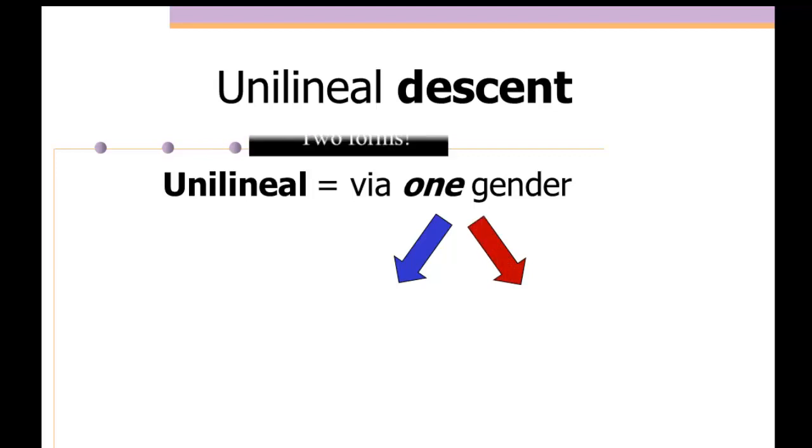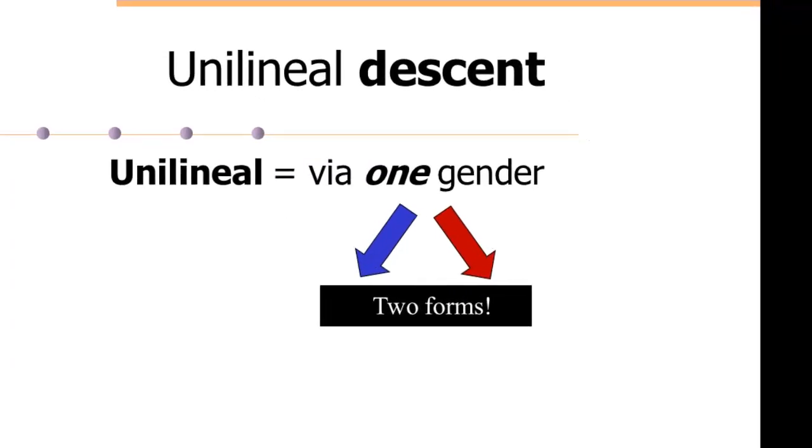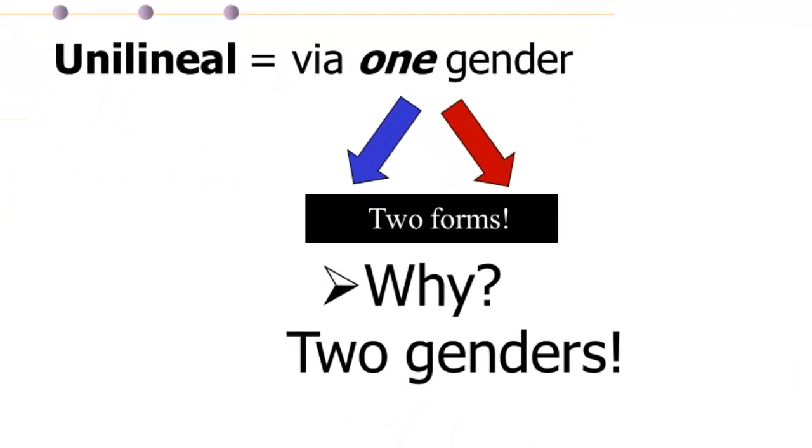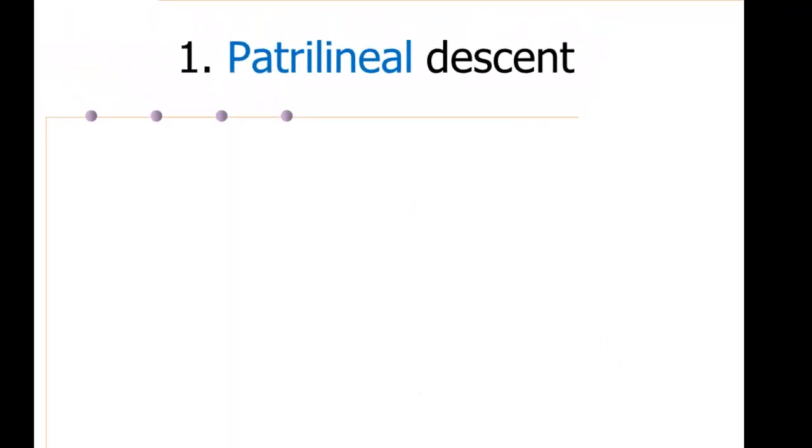And when we ask, well, why would that be? Why would there be two forms of unilineal descent? The answer, of course, is two genders. One form of unilineal descent is called patrilineal descent.